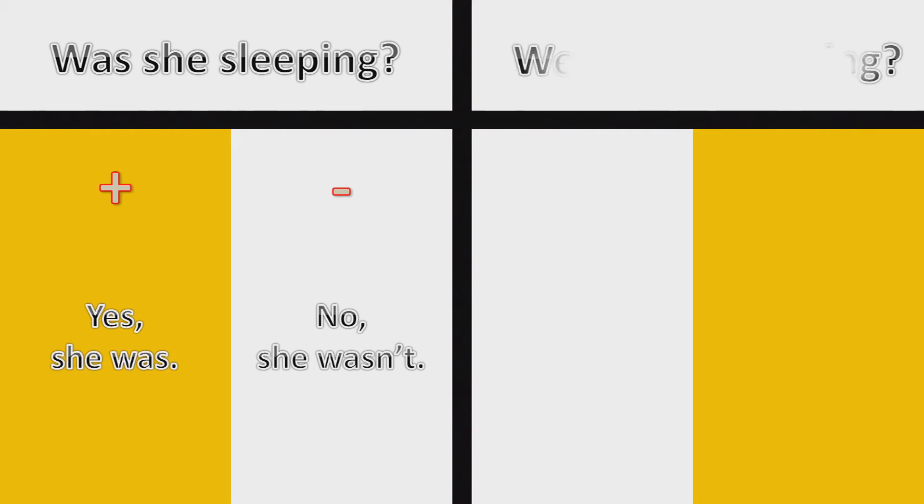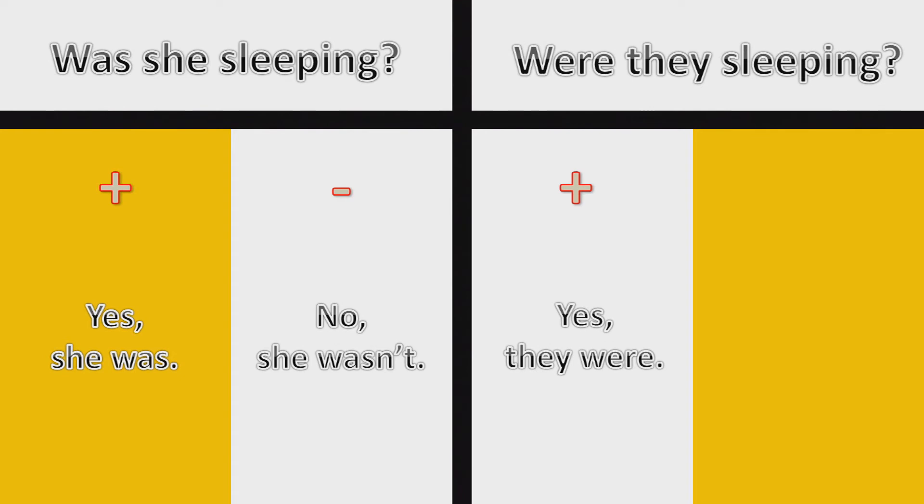One more thing — you need to know how to answer a question in past continuous. Was she sleeping? Yes, she was. Or no, she wasn't. And similarly: were they sleeping? Yes, they were. No, they weren't.